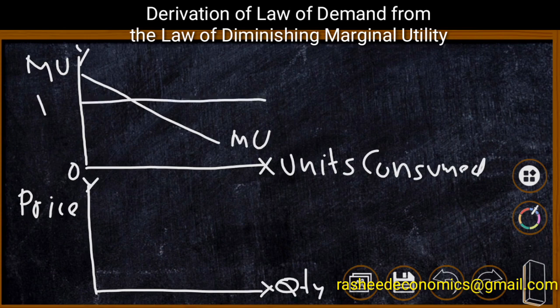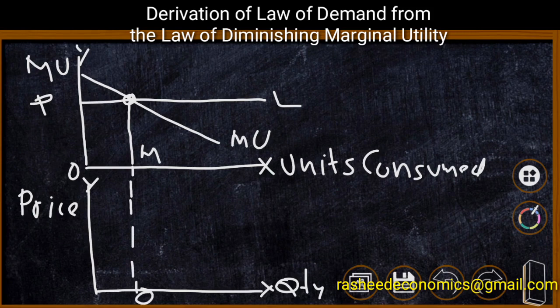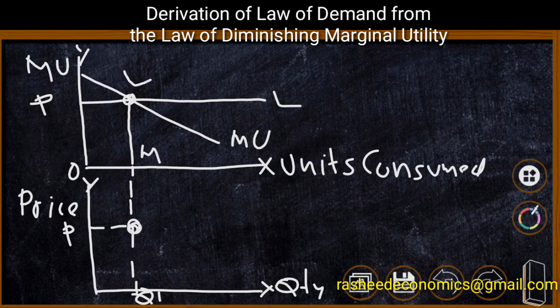We have a price line here — this is the original price line P. When we draw this price line, it is possible to identify the equilibrium point where price is equal to marginal utility. Corresponding to the equilibrium point, we have point M, where OM is that level of consumption. Corresponding to point M, we can identify a point in the lower segment as Q1, and we can plot the price P in the lower segment as well. Thus, we have identified a point corresponding to equilibrium point E in the lower segment — that is point A.